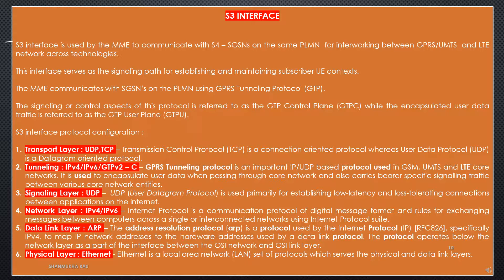S3 Interface Protocol Configuration: first is the transport layer where UDP is used — Transmission Control Protocol is a connection-oriented protocol whereas User Datagram Protocol is a datagram-oriented protocol. Second is tunneling where IPv4/IPv6 GTPv2-C is used — GPRS Tunneling Protocol is an important IP/UDP-based protocol used in GSM, UMTS and LTE core networks; it encapsulates user data passing through the core network and carries bearer-specific signaling traffic between core network entities. Third is the signaling layer where UDP is used — primarily for establishing low-latency and loss-tolerating connections between applications on the Internet. Fourth is the network layer where IPv4/IPv6 is used. Fifth is the data link layer where ARP is used. Sixth is the physical layer where Ethernet is used.